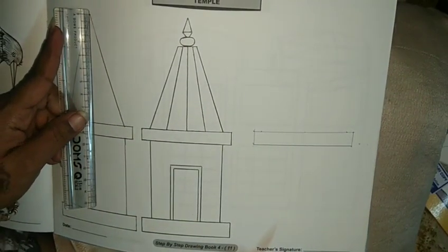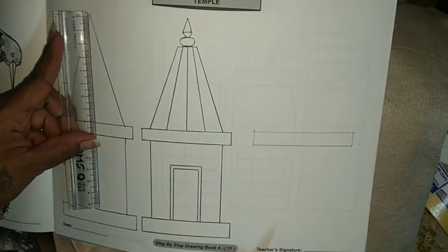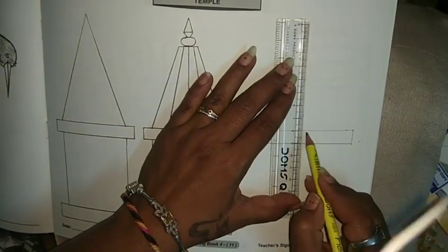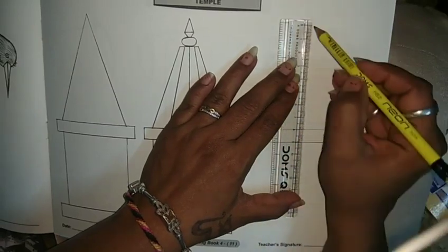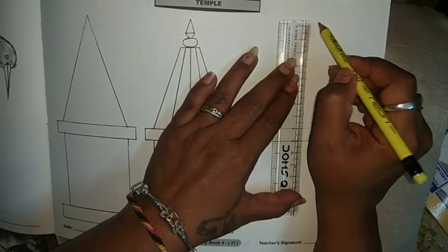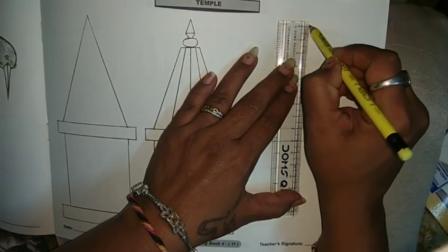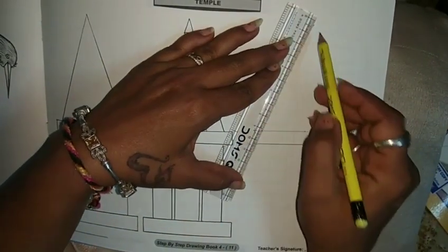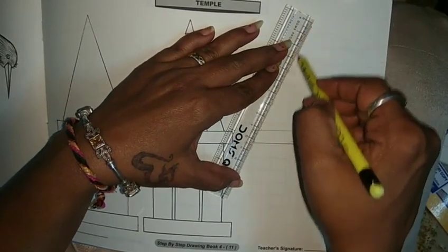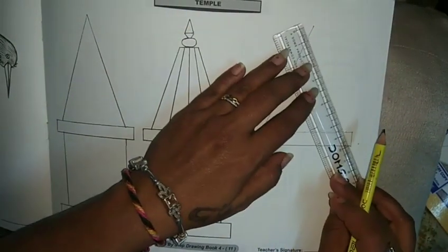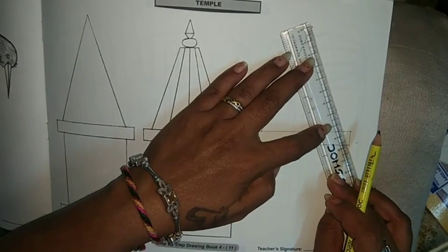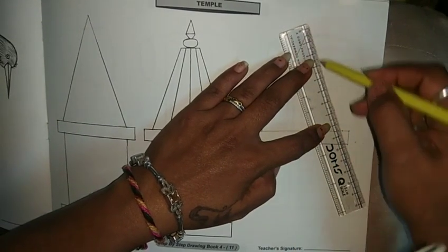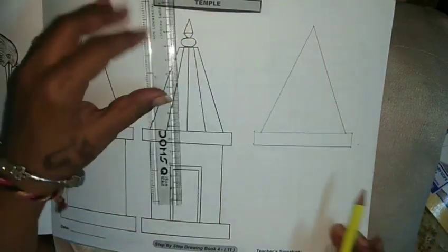Now we will measure the height. It is about 8 centimeters, so what we will do is put our scale here and put one dot at 0 centimeter. Here we have already placed the dots, so we will join the dots. Here you can see our top part is ready.